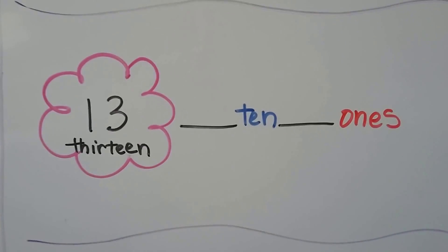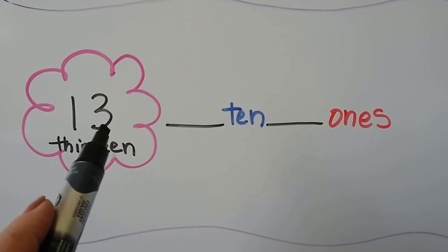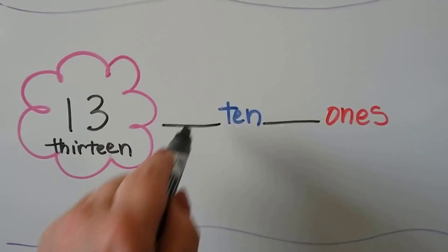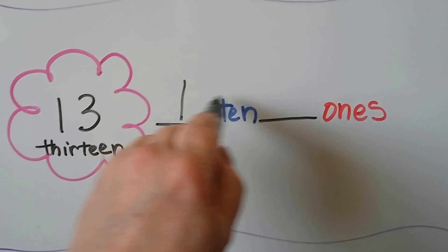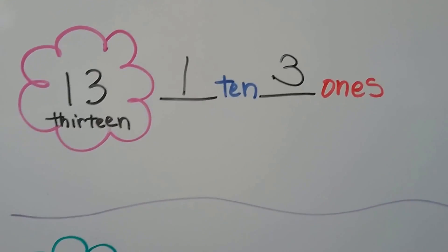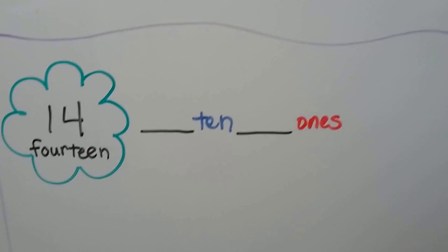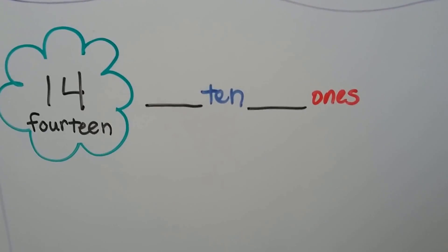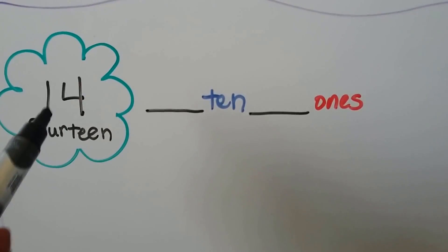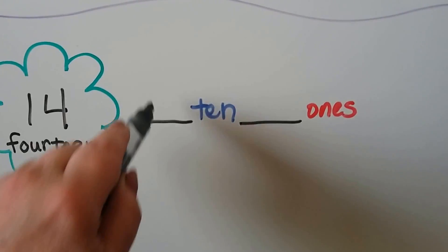Thirteen — we have one ten and three ones. Fourteen — we have one ten and four ones.